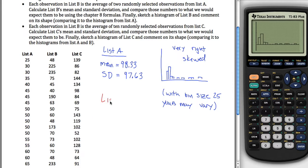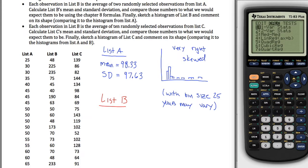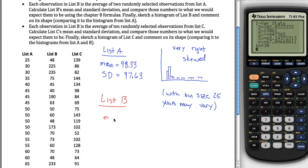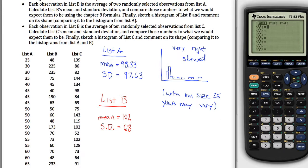All right, now we'll repeat this with List B. Kind of done everything, we're just going to repeat. I've already put in all the points. So, I'm going to go to calc, one variable statistics, but now I want to do L2 because that's where List B is and it tells me that my mean is equal to 102 and my standard deviation is equal to 68.